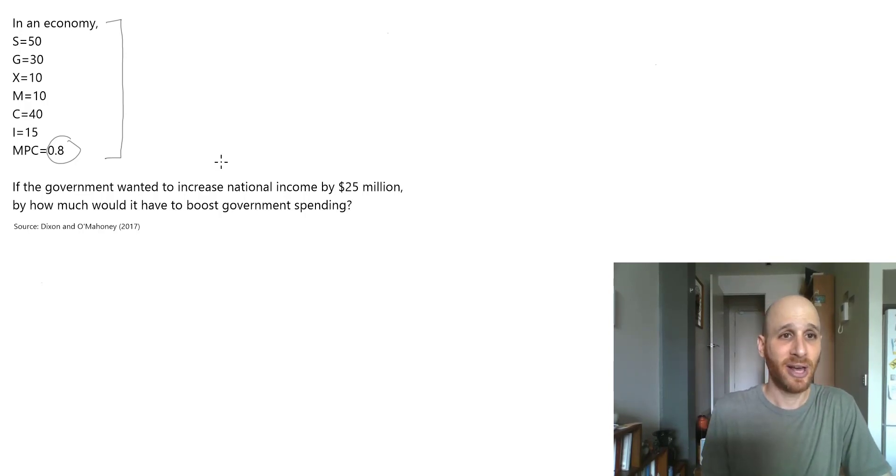Now if the government wanted to increase national income by 25 million dollars, by how much would it have to boost government spending? Let's start by putting together our formulas. We know that a change in income equals the multiplier times the change in aggregate demand.